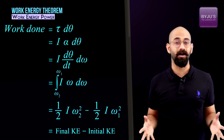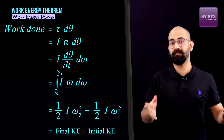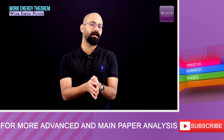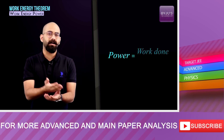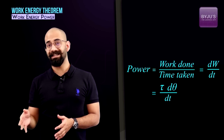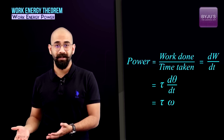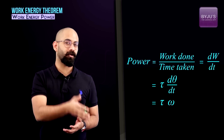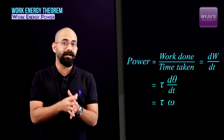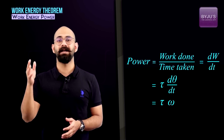This confirms that all our definitions are consistent, and we can apply the work-energy theorem using rotational analogs: net work done (τ·dθ) equals the change in kinetic energy. Finally, let's calculate the power delivered by a torque. Power = dW/dt. Since W = τ·dθ, we get dW/dt = τ × (dθ/dt) = τ·ω. The power delivered by torque is torque times angular velocity — analogous to translational mechanics where power = F × v.